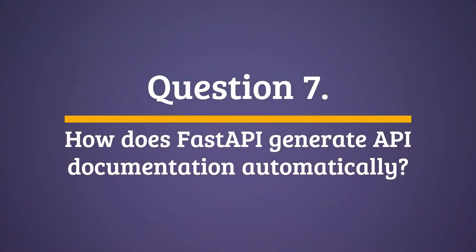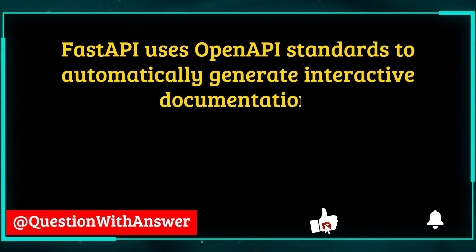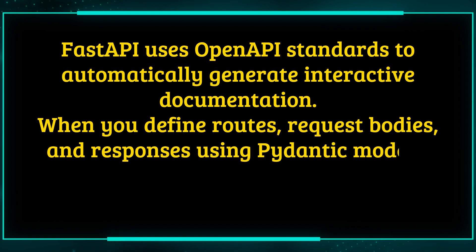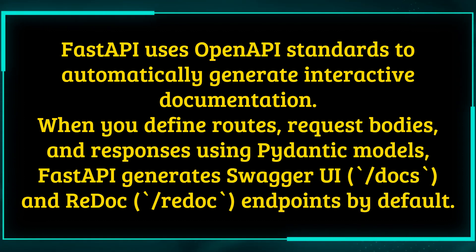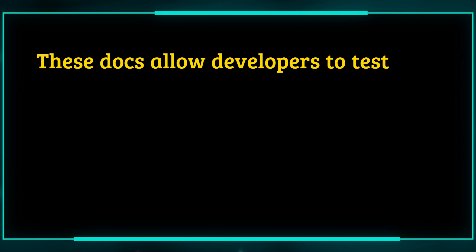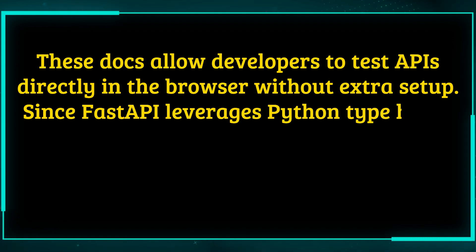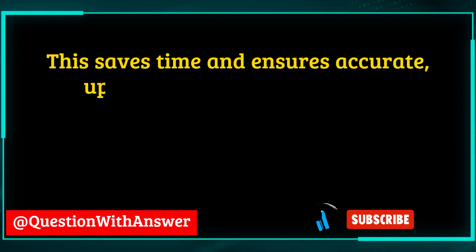Question 7: How does FastAPI generate API documentation automatically? FastAPI uses OpenAPI standards to automatically generate interactive documentation. When you define routes, request bodies, and responses using Pydantic models, FastAPI generates Swagger UI and Redoc endpoints by default. These docs allow developers to test APIs directly in the browser without extra setup. Since FastAPI leverages Python type hints, the documentation includes field types, constraints, and validation rules automatically. This saves time and ensures accurate, up-to-date API documentation.